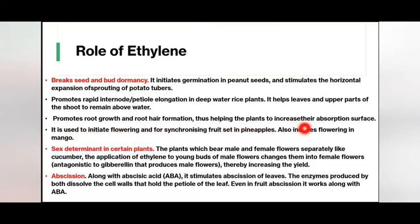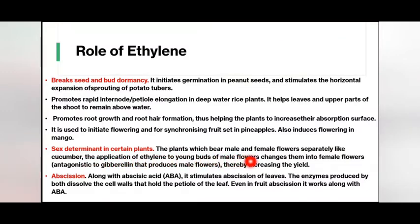Ethylene is used to initiate flowering and for synchronizing fruit set in pineapples. It also induces flowering in mango. As a sex determinant in certain plants — in plants which bear male and female flowers separately, like cucumber — application of ethylene to young buds of male flowers changes them into female flowers. This is antagonistic to gibberellins, which produce male flowers, thereby increasing the yield. Along with abscisic acid, ethylene stimulates abscission of leaves, as the enzymes produced dissolve the cell walls holding the petiole of the leaf. It also works with abscisic acid in fruit abscission.